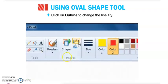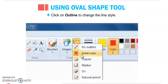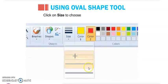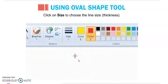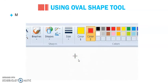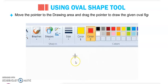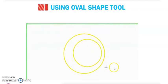Then click on Outline to change the line style. Click on Size to choose the line size and thickness — you can select a very thin or very thick line. Then use the pointer to the drawing area and drag the pointer to draw the desired oval figure.